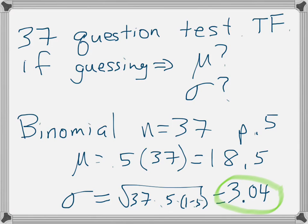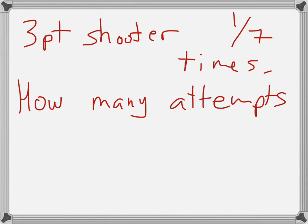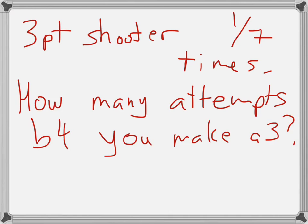Next question. Let's say you are a really bad three-point shooter like me, and you make the three-pointers one out of seven times. How many attempts before you get one right, before you make one shot?